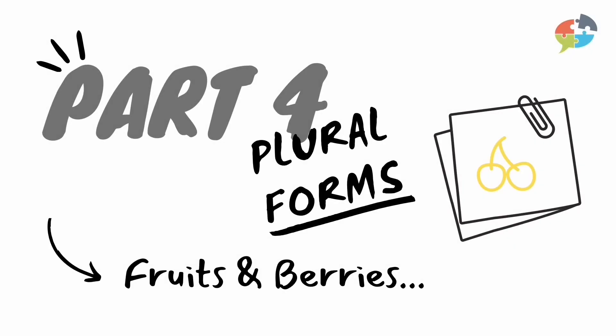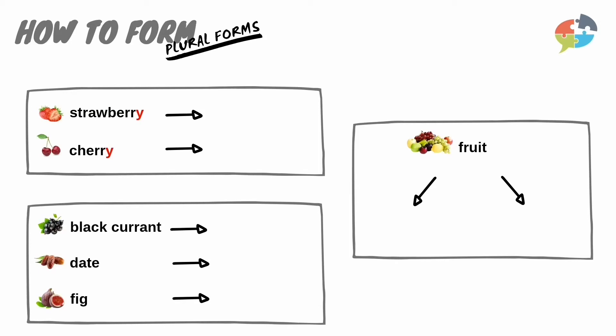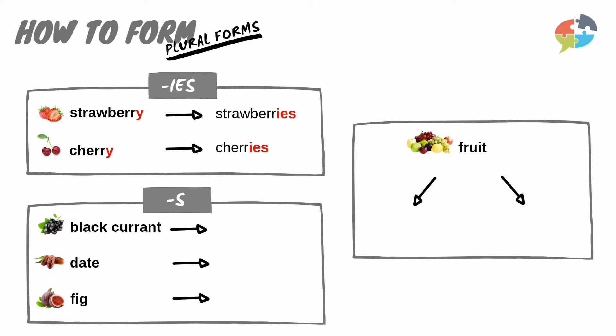Nice job. Now it's time to look at how to create plural forms. Part four: fruit vocabulary — how to create plural forms. Any type of fruit that ends with a Y changes to IES to create the plural form. For example, strawberry is strawberries in plural form, or cherry is cherries. The rest of the fruits come with an S at the end. For example, blackcurrant is blackcurrants in plural form, or date is dates, fig is figs, etc. Additionally, a plural form of fruit can either be fruit again, or fruits with the S at the end as well. Let us know if you have any questions in the comments section.